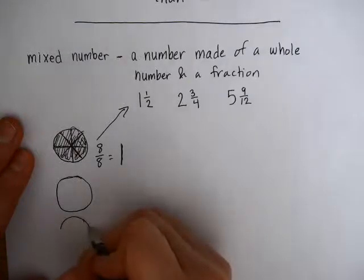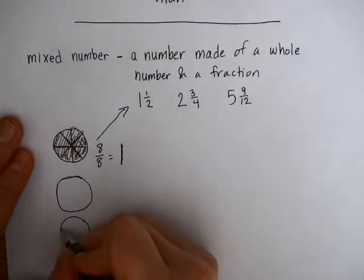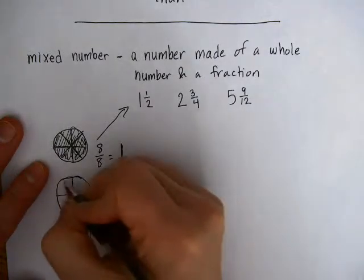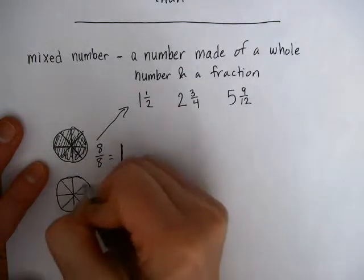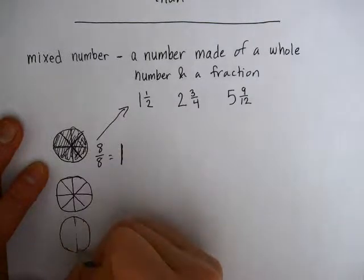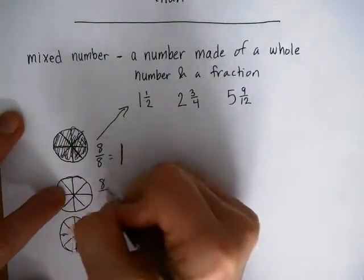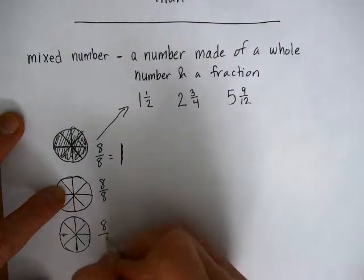As you can see, we have 3 wholes now. Let's split all these pizzas up into 8 parts each, so that it's easier for us to talk about how much we have all together. We have 8 out of 8 here, 8 out of 8 here, and 8 out of 8 here.